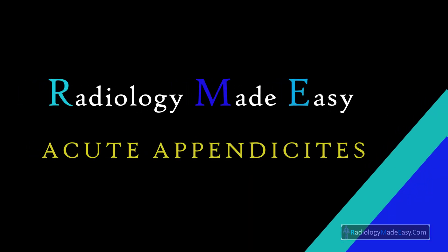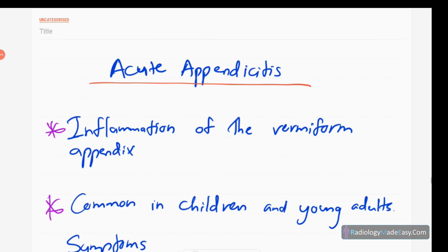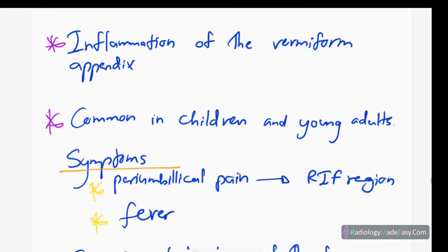Welcome back to Radiology Made Easy. Today I'm going to make a new presentation on one of the commonest surgical emergencies: acute appendicitis. Appendicitis is acute inflammation of the vermiform appendix. It is common in children and young adults, specifically in the second and third decades of life.